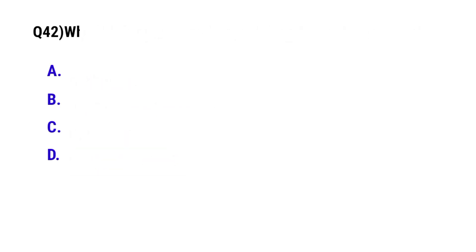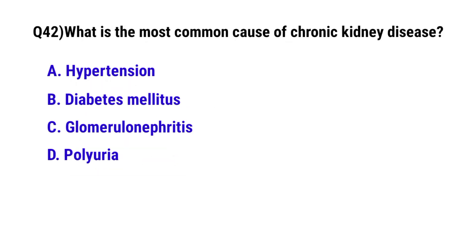Question number 42: What is the most common cause of chronic kidney disease? The correct option is B: Diabetes mellitus.